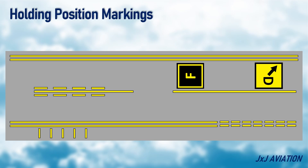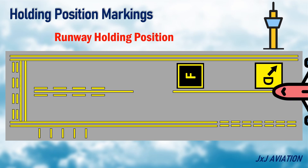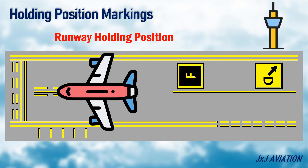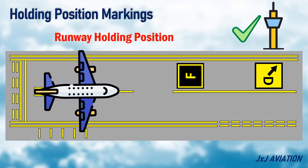Holding position markings — there are different holding position markings on a taxiway, depending on the type of operation at the airport. The runway holding position marks the intersection between the runway and the taxiway. An aircraft should cross the solid line only after clearance is obtained from ATC. For crossing the dashed line, no clearance is required.